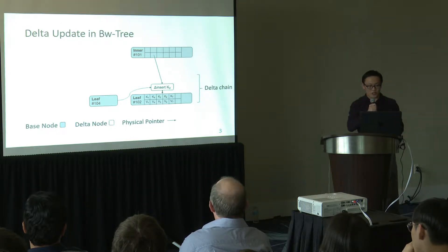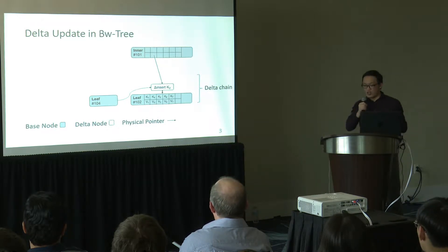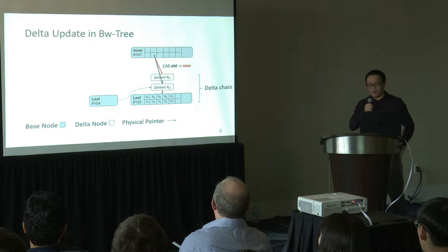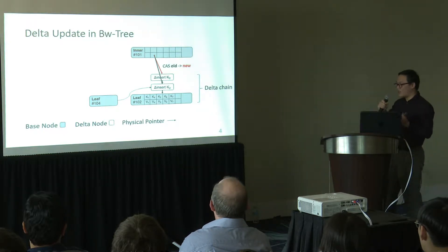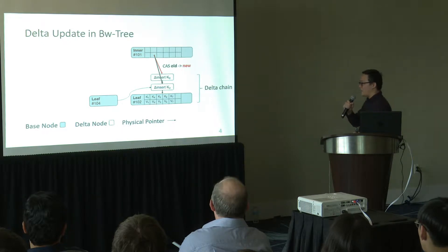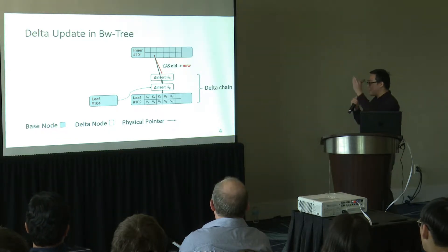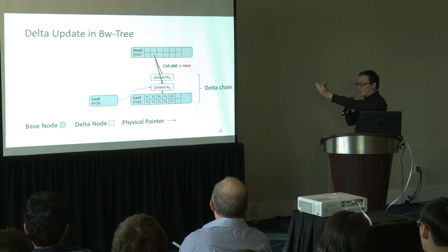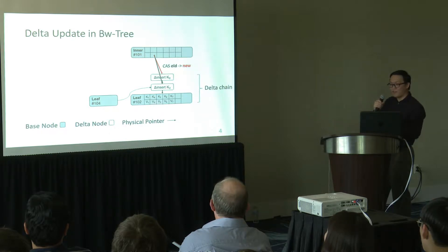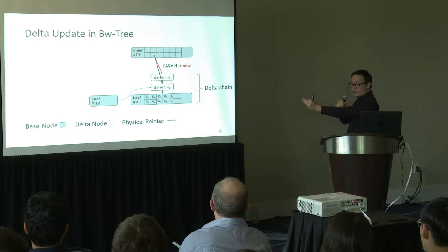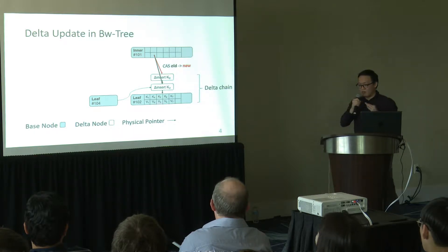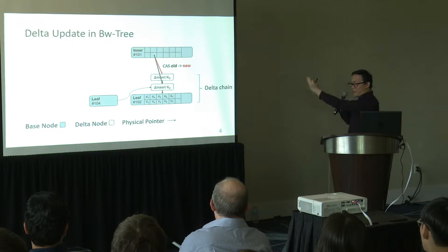We also have delta nodes, whose background is white. Delta nodes serve as the modification log of a base node because in the BW Tree, base nodes are immutable. So if a worker thread hopes to update the tree, first the worker thread allocates a new chunk of memory called a delta node. Then the worker thread stores both the operation and the data in the delta node. The last and most important step is to use compare-and-swap to change the physical pointer from the parent node from the old one to the new one, serializing worker threads. Only one worker thread can succeed and all others will retry from the root.